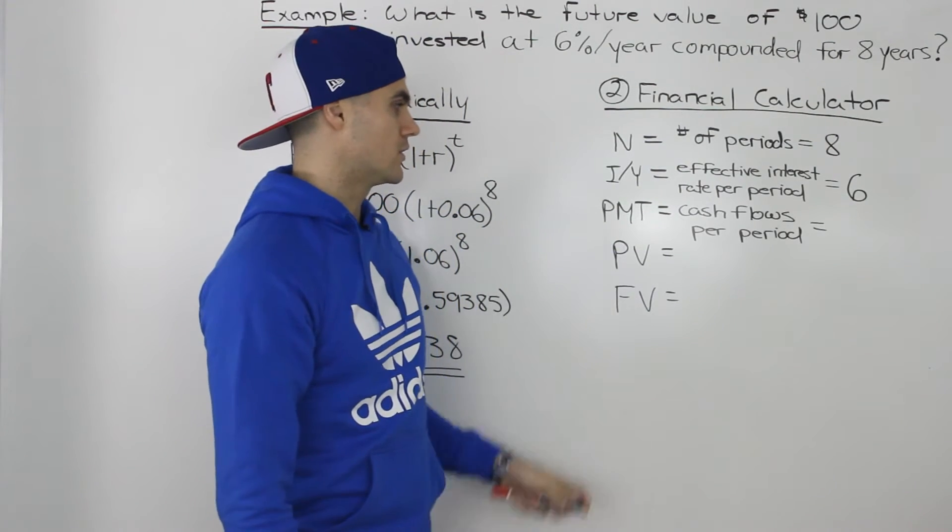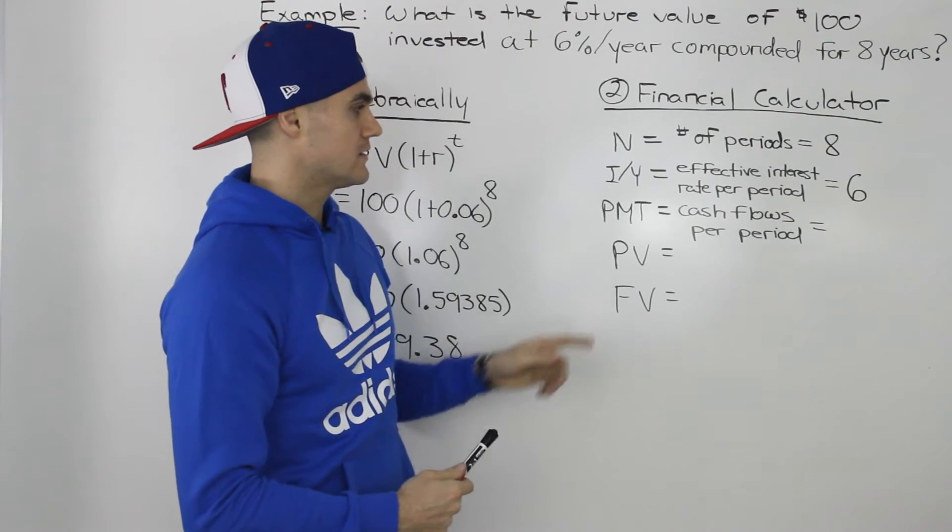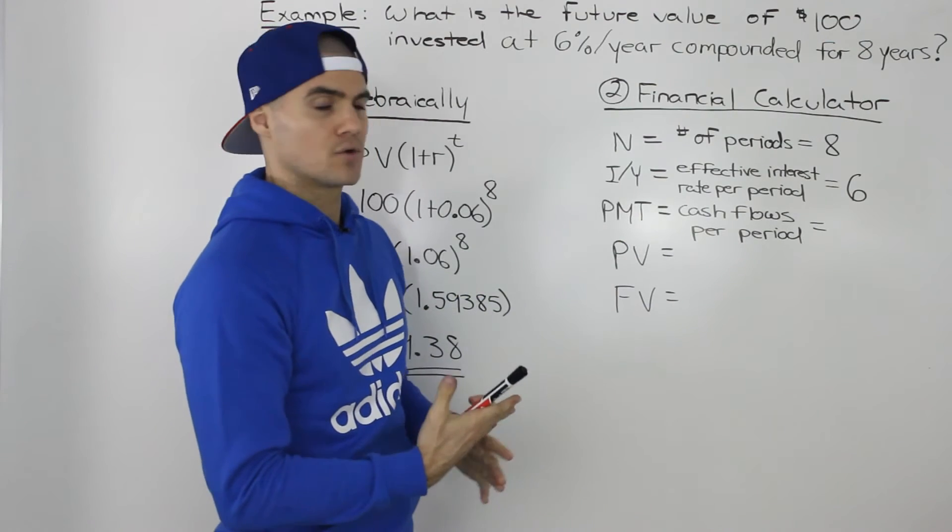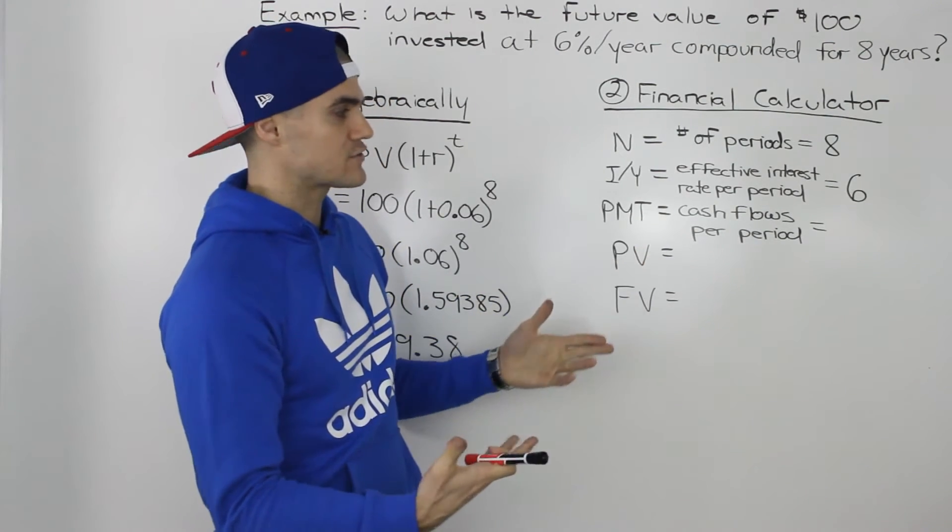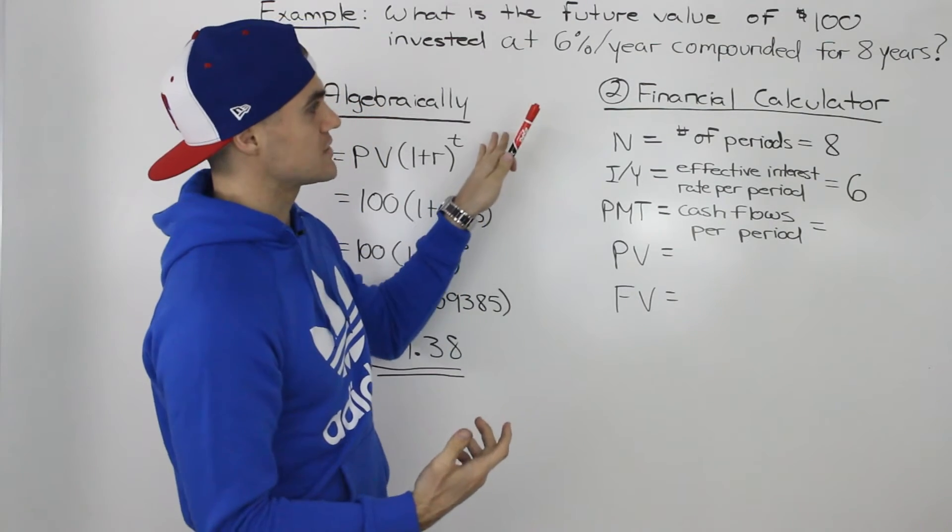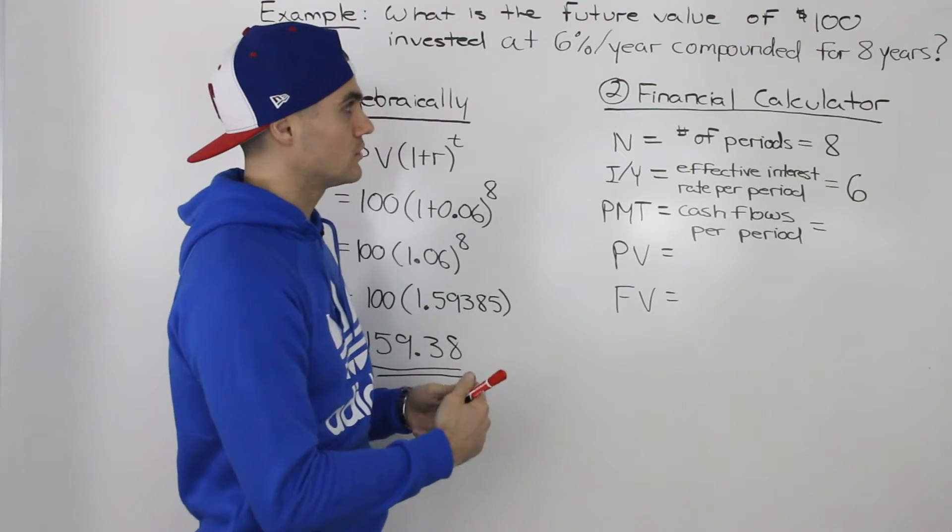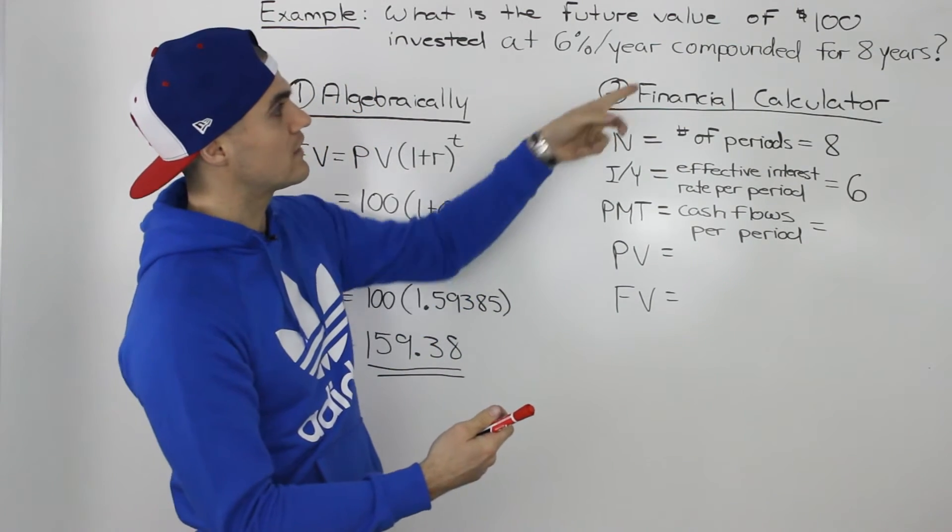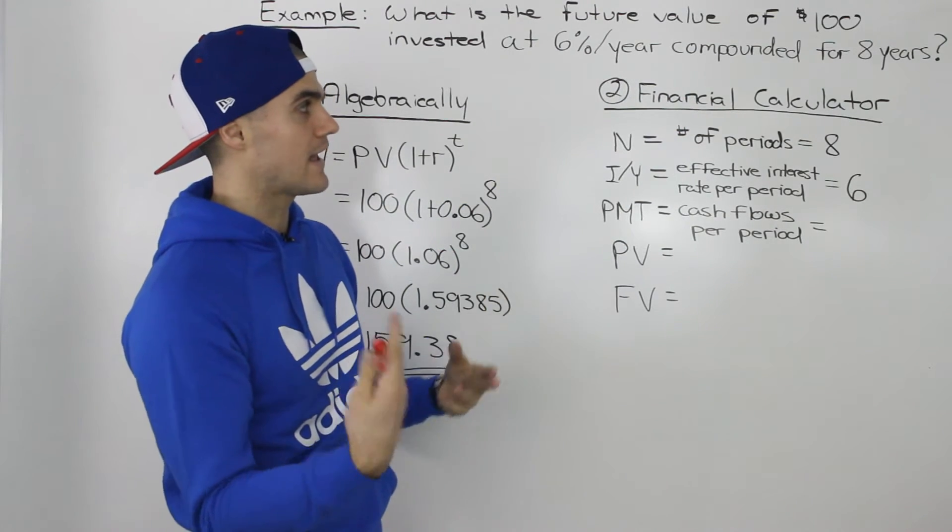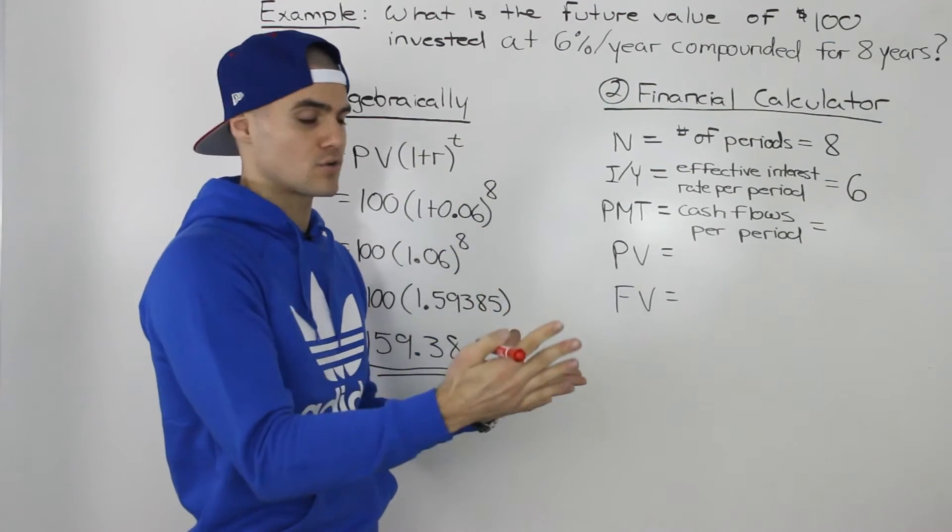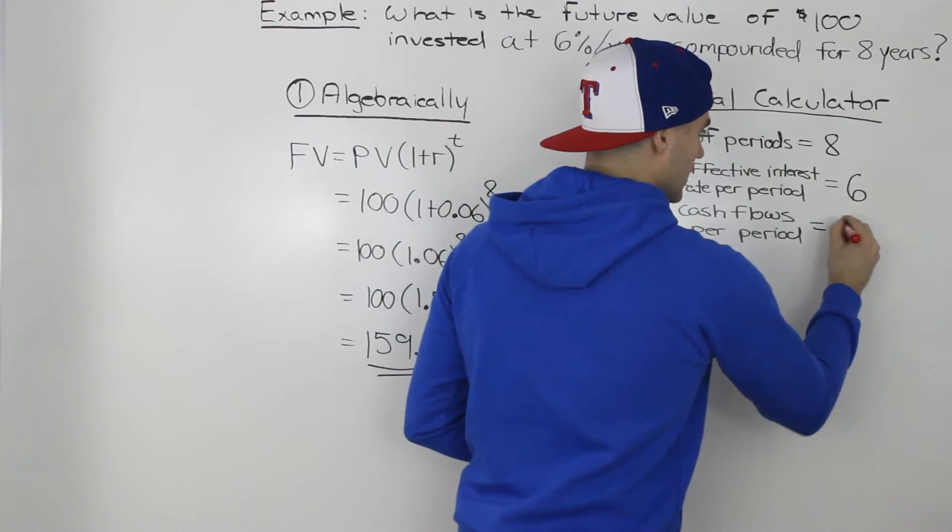Next variable is this PMT amount, which is short form for payment, and what this represents is the cash flows that happen per period. So in this case, any cash flows that happen per year. And if you look at our scenario, there are no cash flows happening per year. There's only a single cash flow that we invest in, $100, and then we're going to get back a certain amount of cash flow at the end of 8 years. There's no other cash flows in between that. So the cash flows per period here, or the PMT amount, is 0.